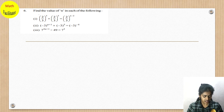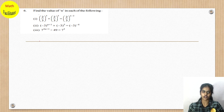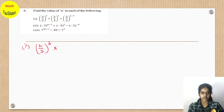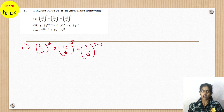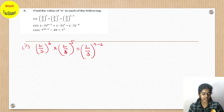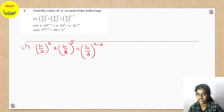So question number 6 — here you will have to find the value of n in each of the following. The first part is: (2/3)³ multiplied by (2/3)⁵ is equal to (2/3)^(n-2).